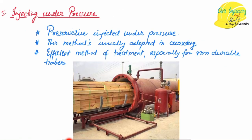The next method is injecting preservatives under pressure. The wood pieces are inserted into a tank connected to a pressure assembly, and the preservatives are applied under high pressure. This method is conventionally used for preservatives with high viscosity or when we want to inject the preservative to a greater depth. This method is considered more efficient, especially for non-durable timbers.